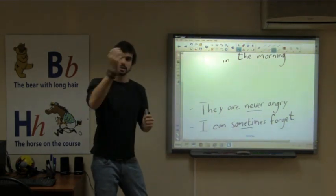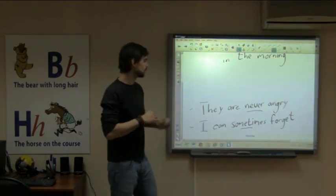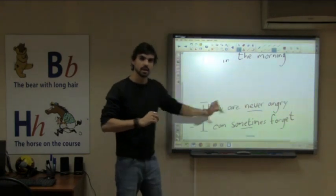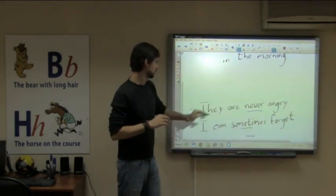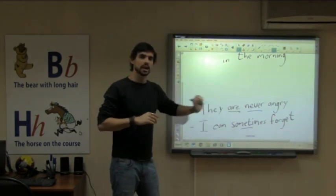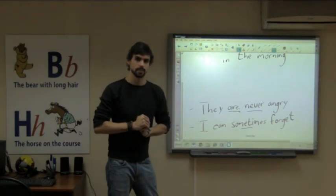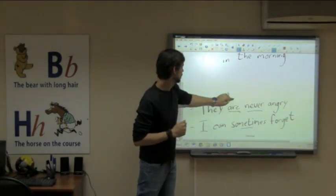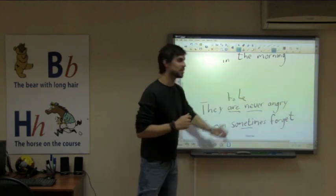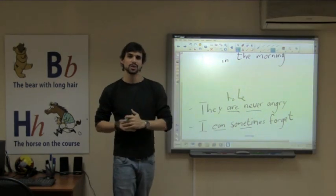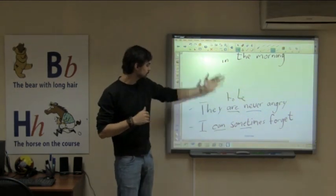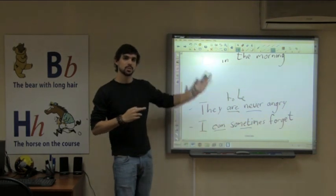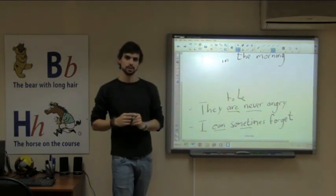As you can see, they're not in front of a verb, but they are behind our verb. Now when do we do this? What kind of verb is 'are'? Yes, it's a verb to be. So we always use our adverb of frequency behind our auxiliary verb as well as our verb to be.